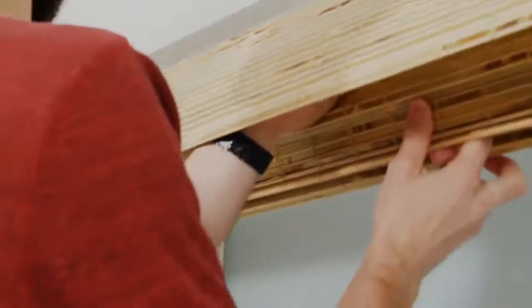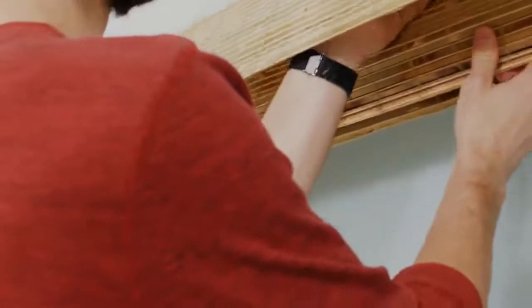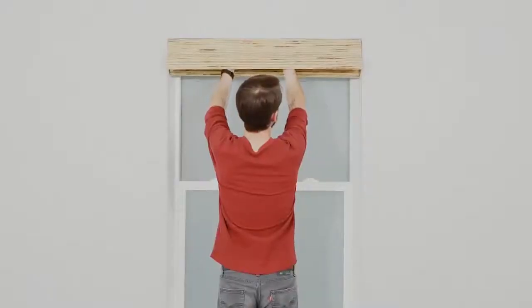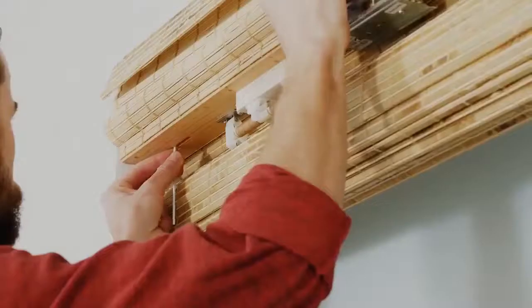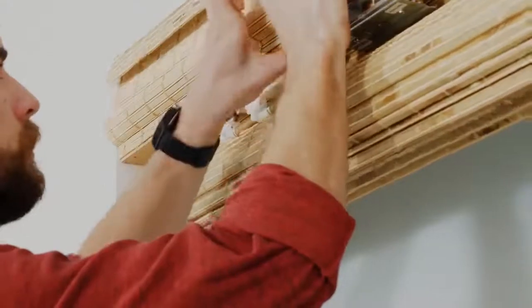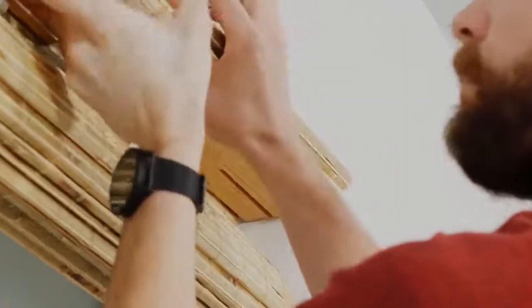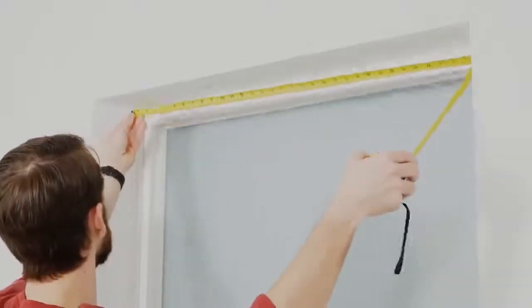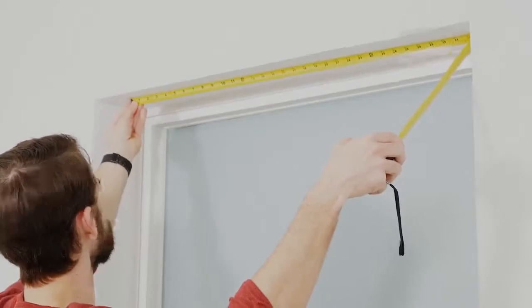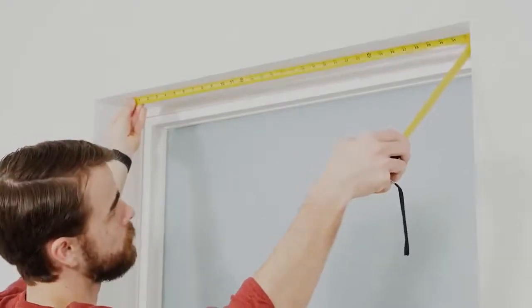To make sure the shade is flush with the edge of the window, I'm going to simply set it inside the top of the window like this. Then make a mark through each slot where the bracket will go. Measure between your two marks to make sure they are even and aligned before drilling in the brackets.